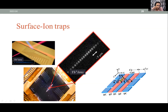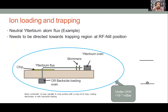This is the real picture of a surface trap, roughly one to two centimeters in size, with electrodes hundreds of micrometers wide. Here, real ytterbium ions are trapped — a chain of 10–20 ytterbium ions that fluoresce when we apply laser light. The emitted photons are collected via a specialized optical system and imaged using an EMCCD camera.